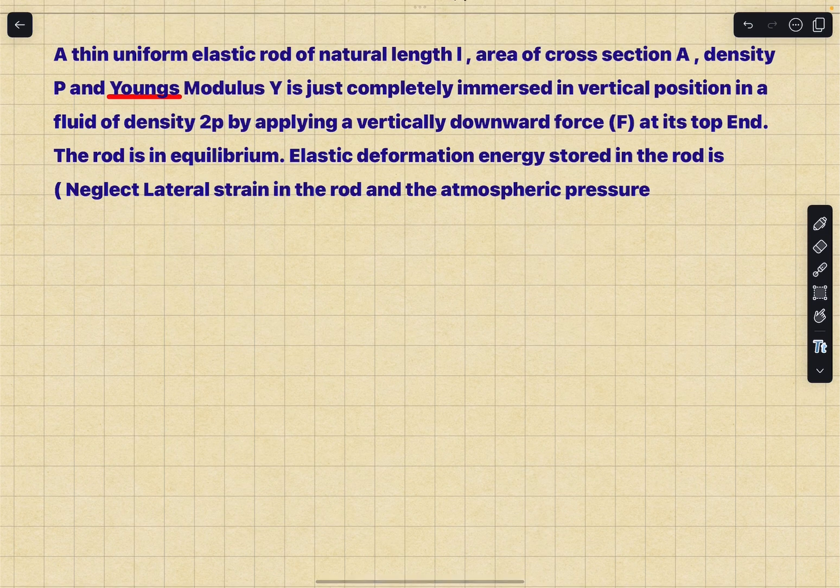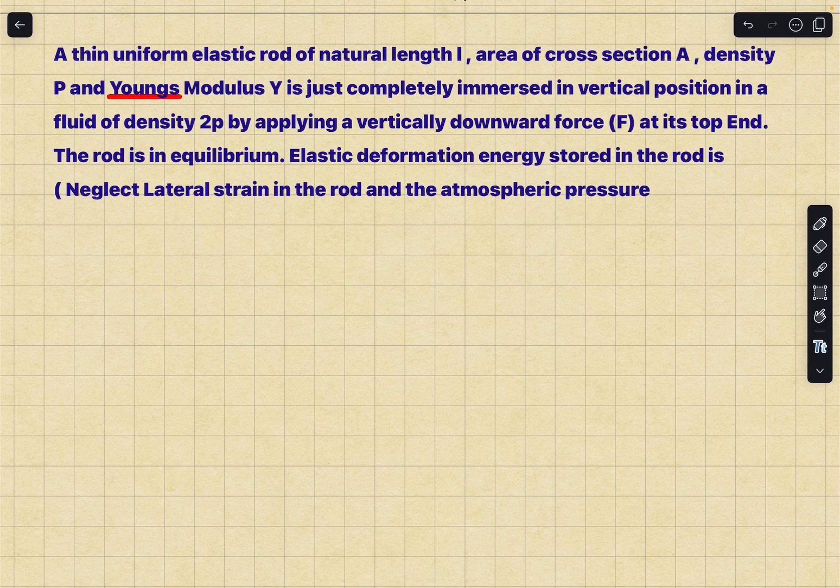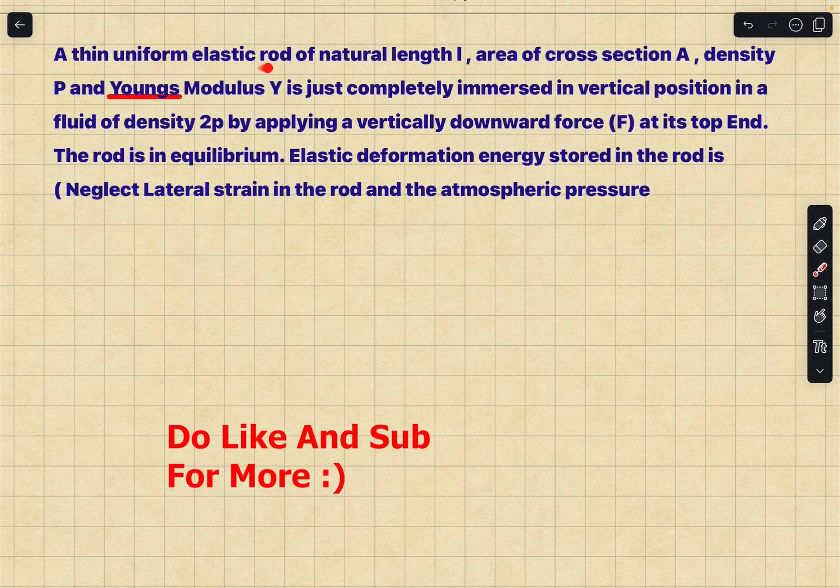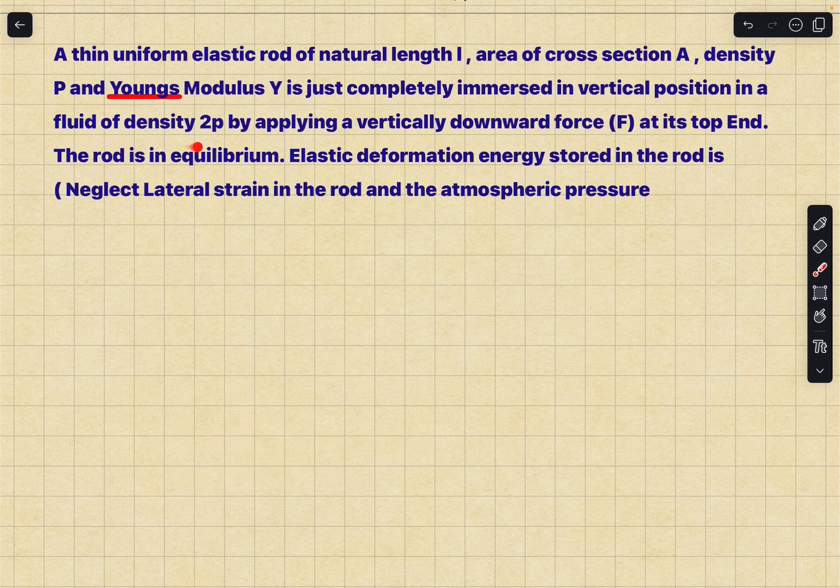This problem is a bit more challenging because gravity is also coming into picture. Let's read the problem statement first. We have a thin uniform elastic rod of natural length L, area of cross section A, density rho and Young's modulus Y.